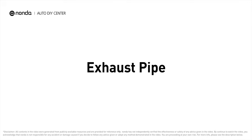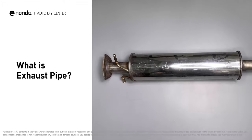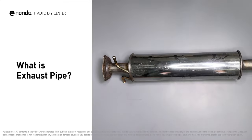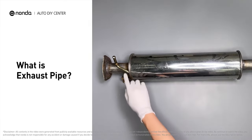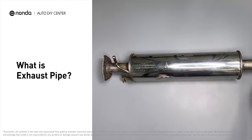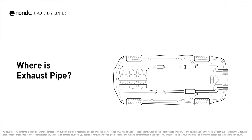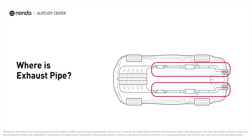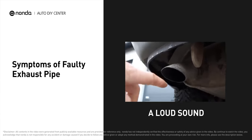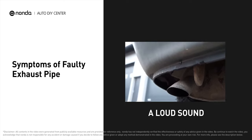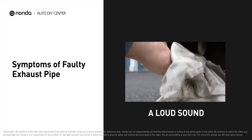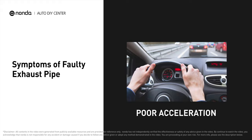The entire exhaust system conveys burnt gases from the engine and includes one or more exhaust pipes. It is comprised of many pipes and pieces that work together to allow exhaust gases to escape the engine. The exhaust pipes run along the undercarriage of the vehicle, eventually ending with a visible tailpipe. A faulty exhaust pipe causes a loud sound when you rev up the engine, generates a strong smell in the exhaust emissions, and you may experience poor acceleration.